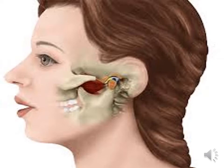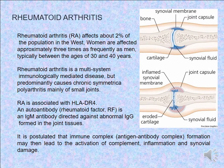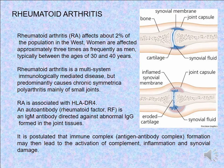We now move to another important and very common disease in the population: rheumatoid arthritis. Rheumatoid arthritis, called RA, affects about 2% of the population in the West. Women are affected approximately three times as frequently as men, typically between the ages of 30 to 40 years.